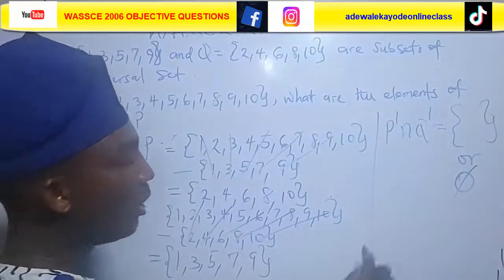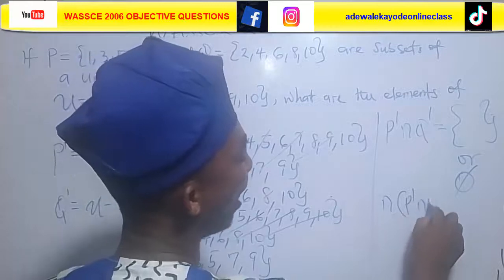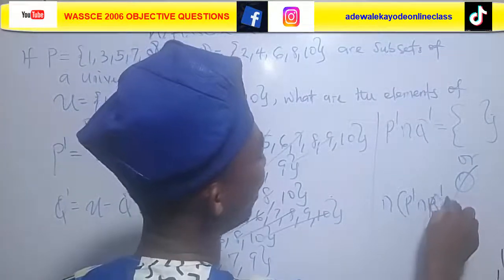An empty set, or we use this symbol. It means an empty set. Don't forget, if you are looking for the total number of elements in this set, it will be zero because there's nothing inside.